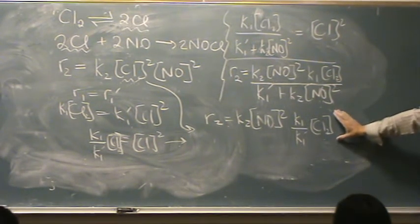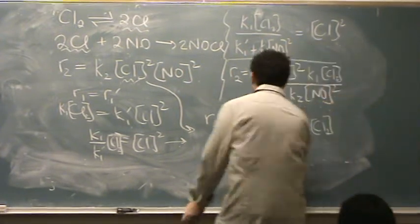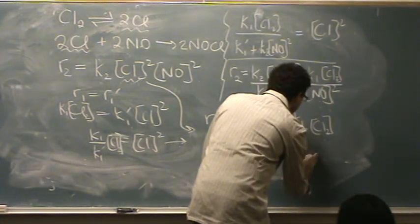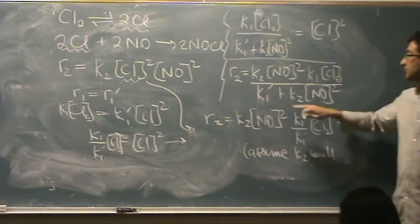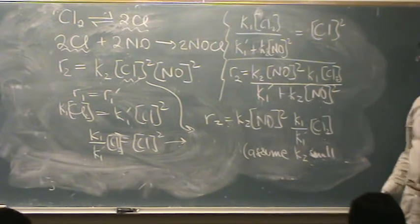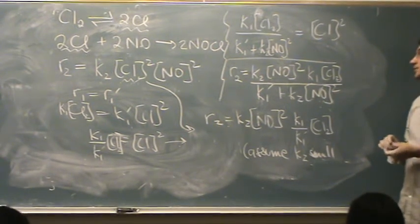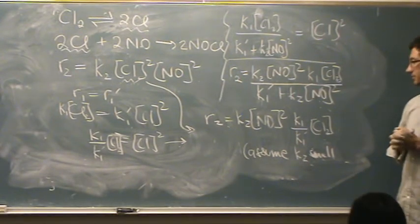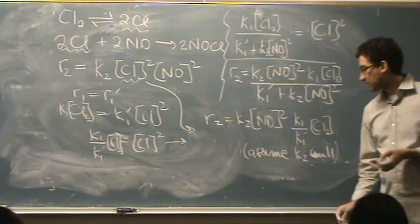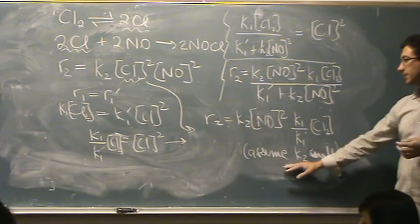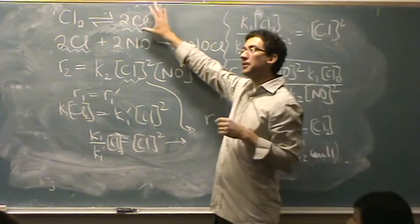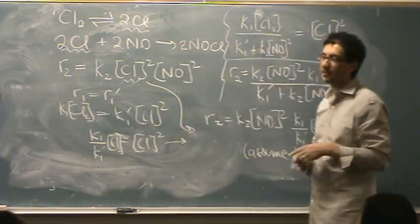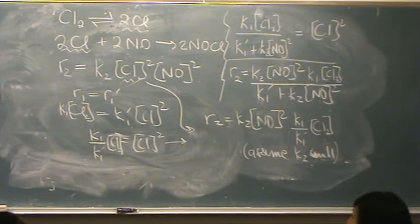Notice what assumption we're making to get this answer — K2 is small. If K2 is small, the K2[NO]² term disappears from the denominator and you get the same answer. So inherently, when solving it this way you're assuming K2 is small, meaning step 2 is slow. If the problem states otherwise you can't do this. On the final exam, the question will either be specific or there will only be one way to solve it.